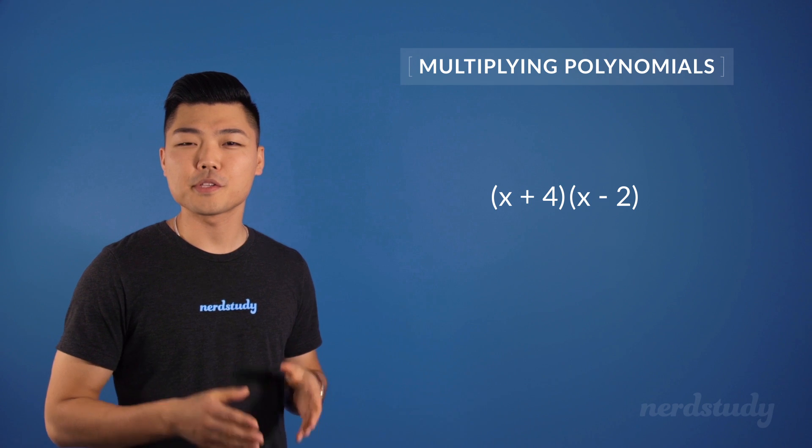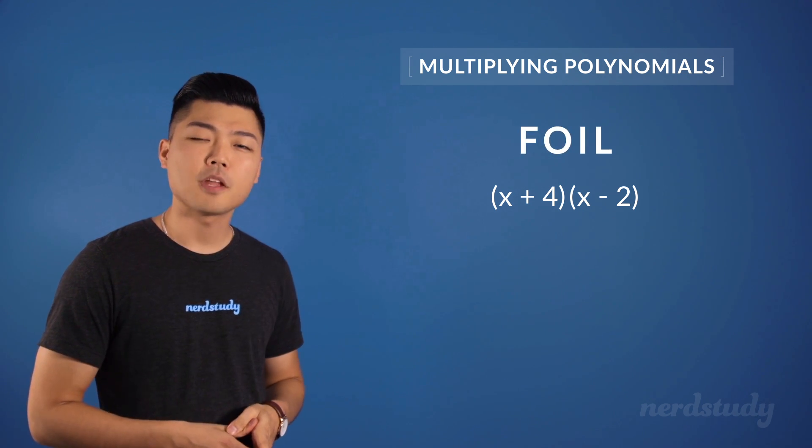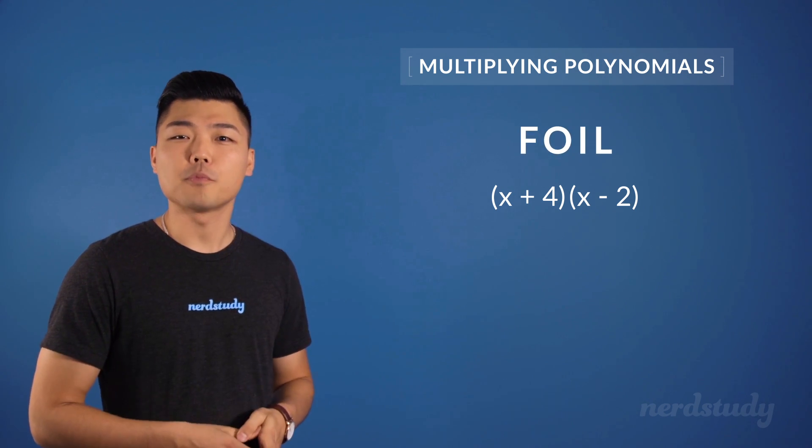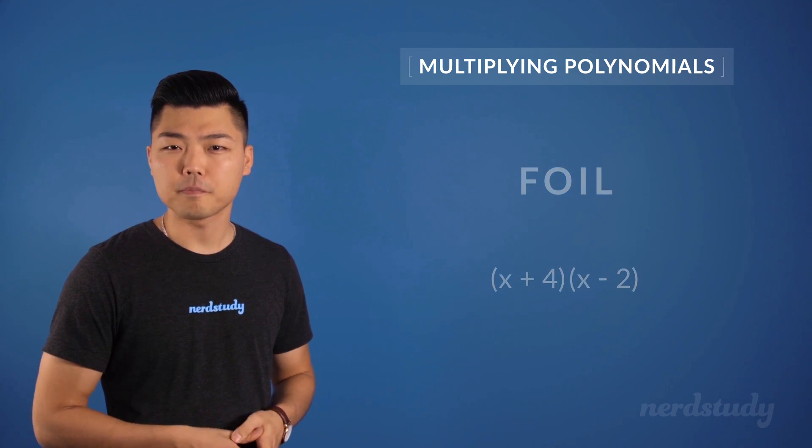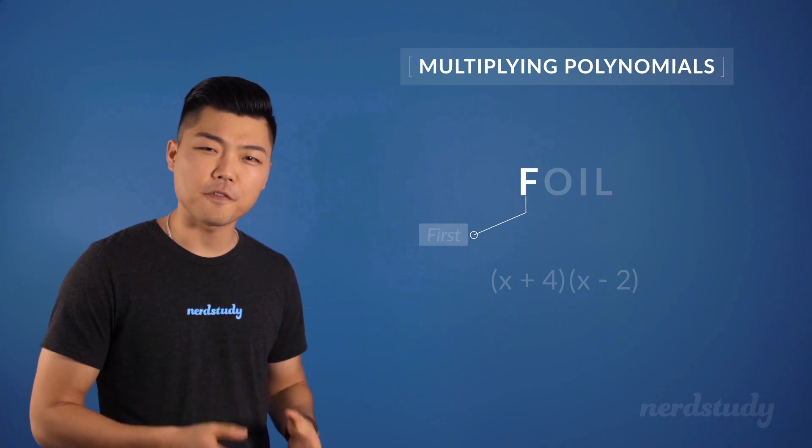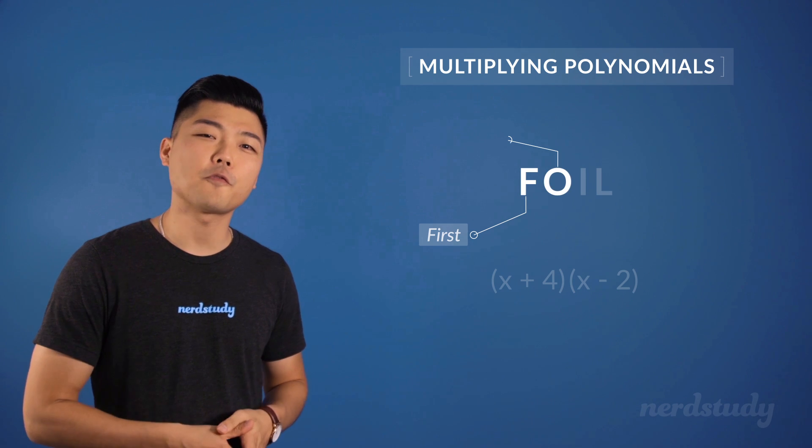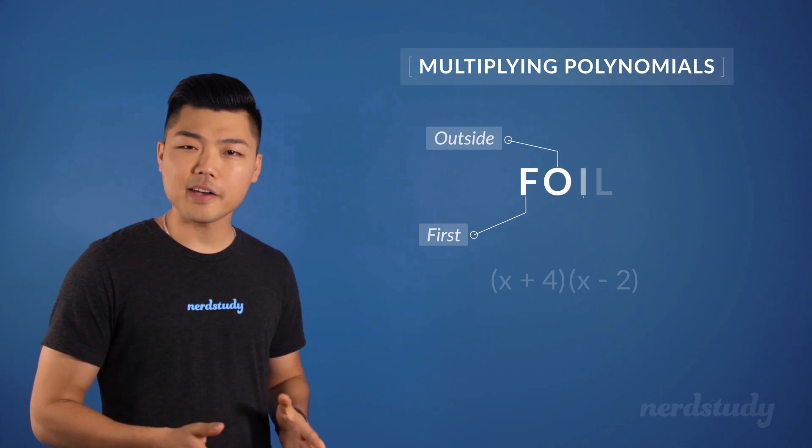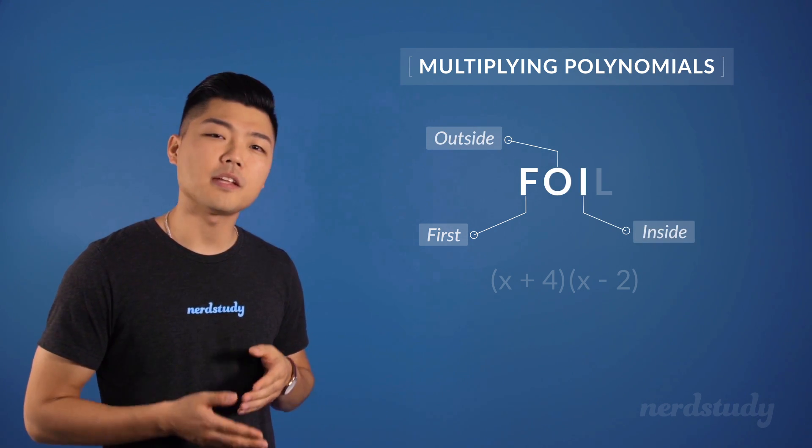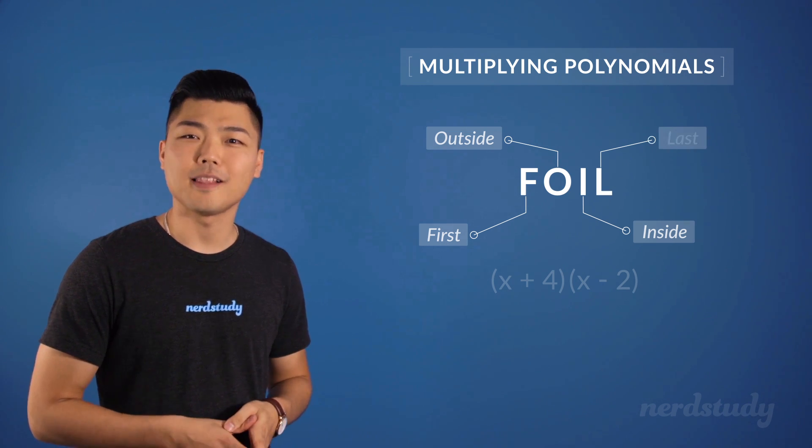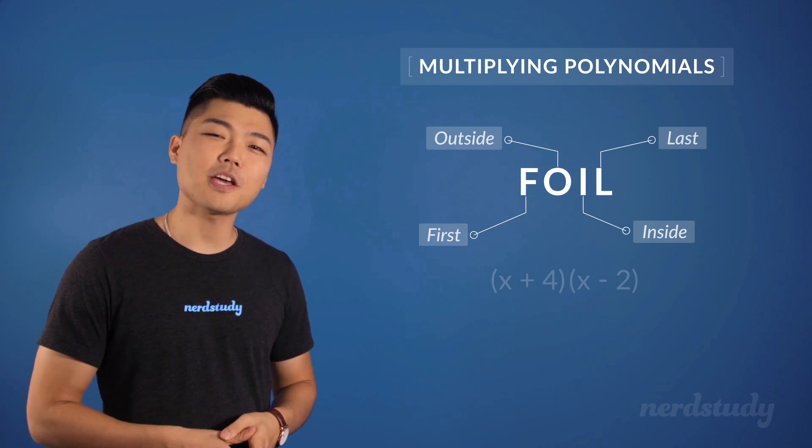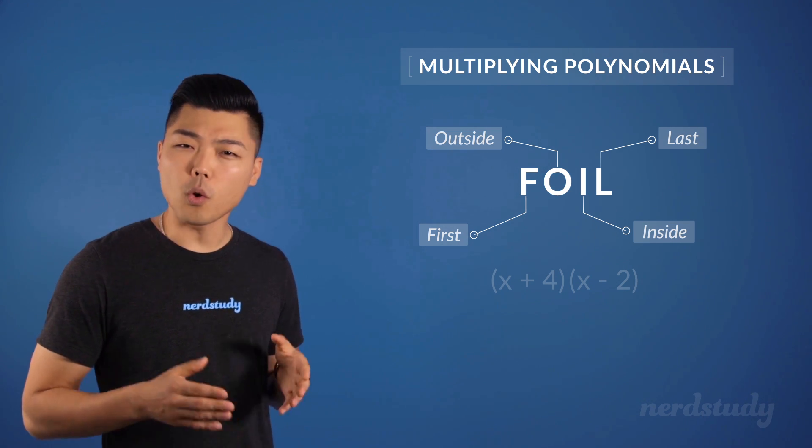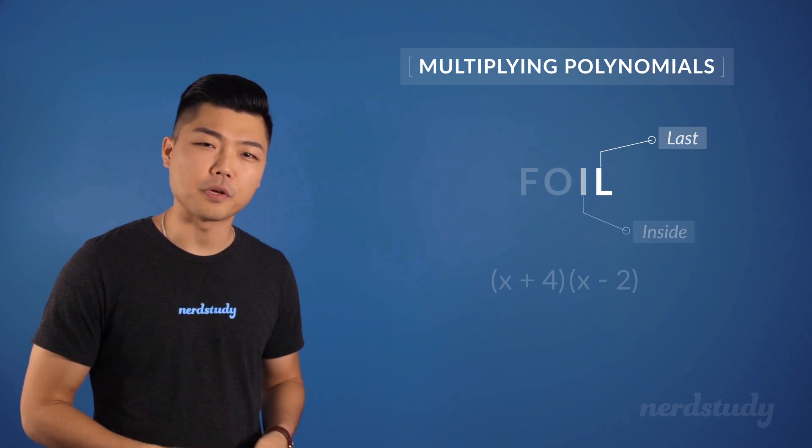FOIL is an acronym which stands for the following: F stands for first, O stands for outside, I stands for inside, and L stands for last. So FOIL is just a general guide to what order you should multiply the binomials in.